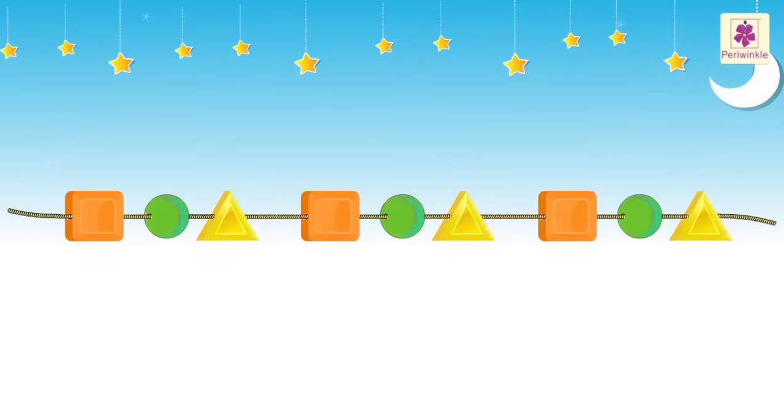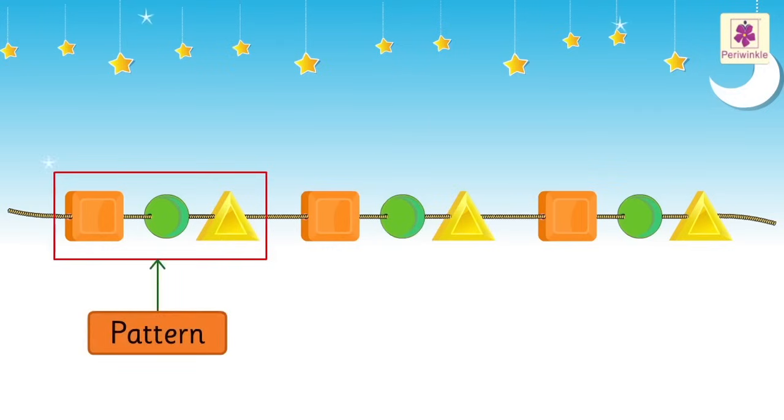Look at the bracelet. We have a square, circle, triangle. Square, circle, triangle and so on. This is called a pattern as it is repeating itself. Look, we got the pattern.